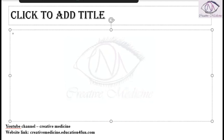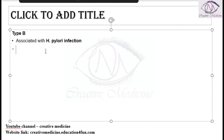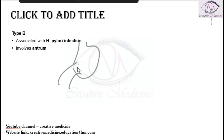The second type is type B chronic gastritis. Type B chronic gastritis is associated with H. pylori infection, and it mainly involves the antrum of the stomach.